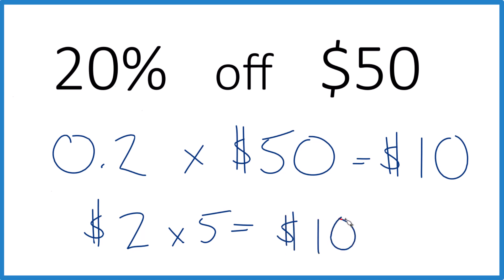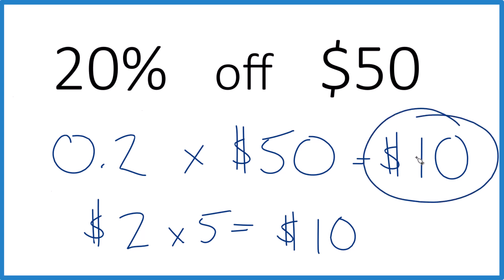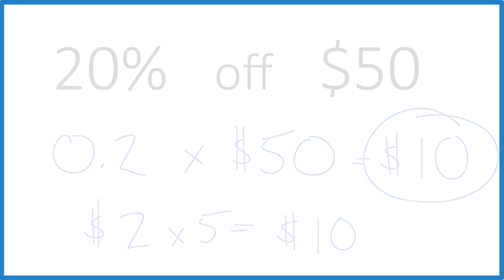Breaking this up into smaller parts is sometimes a good way to do it. That's it — this is Dr. B. Taking 20% off of $50, the answer is $10, so you'd be paying $40 for your purchase. Thanks for watching.